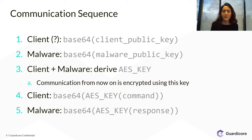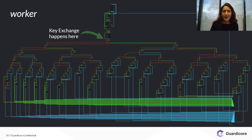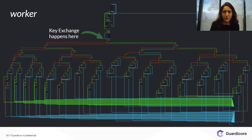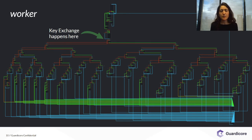I went to the worker function in the disassembly — this is Cutter, the Radare2 GUI. The key exchange appears exactly where the arrow points. After the key exchange takes place, as we said before, the client sends its encrypted command.